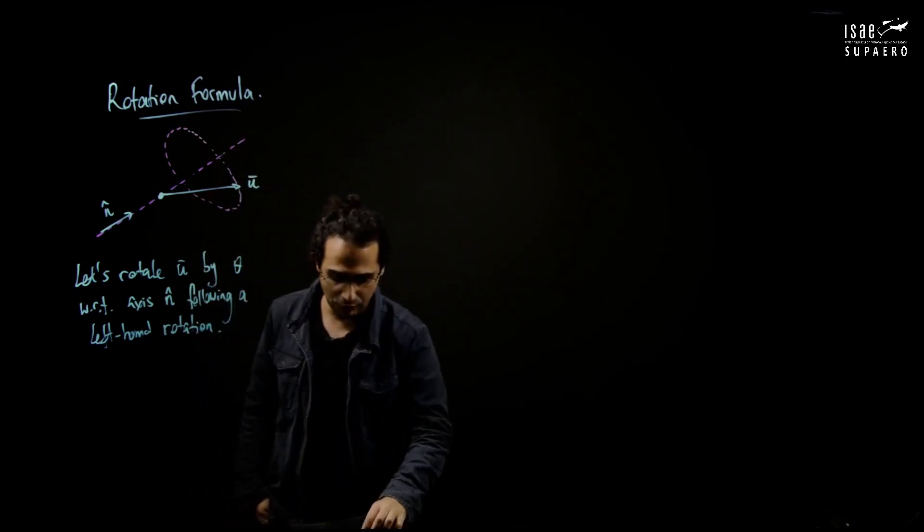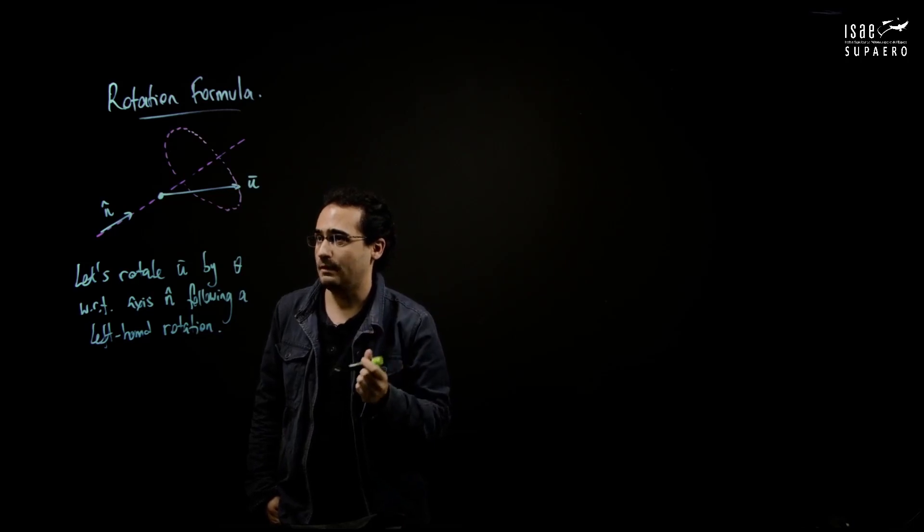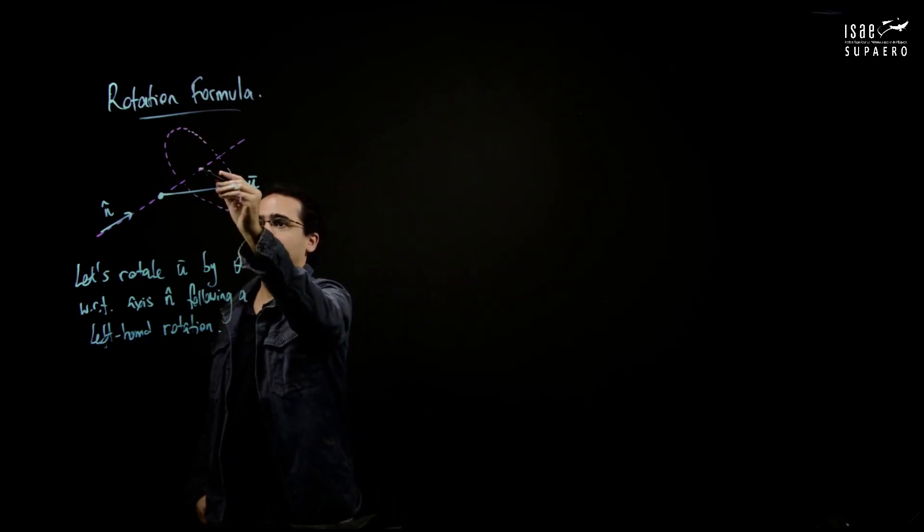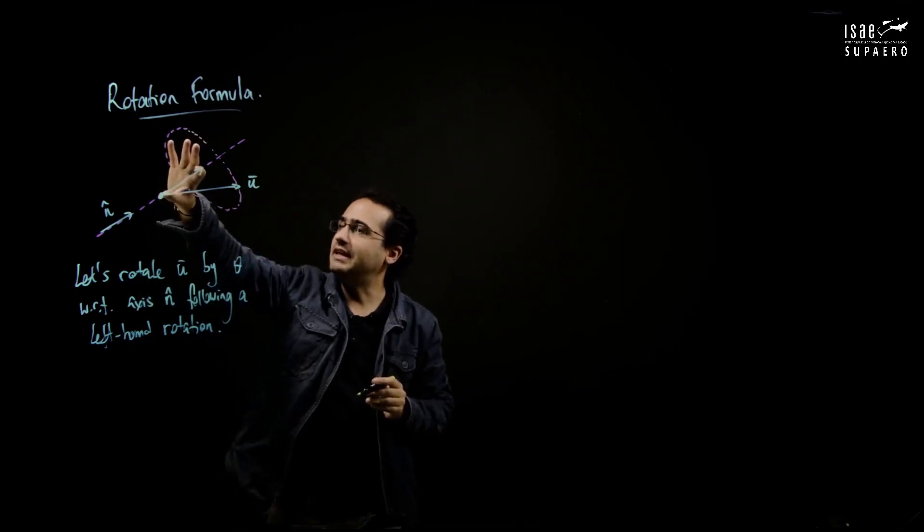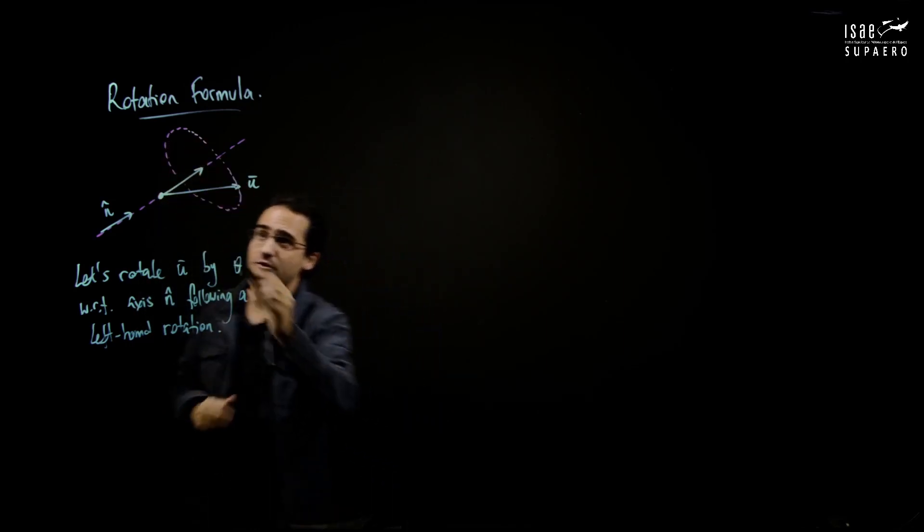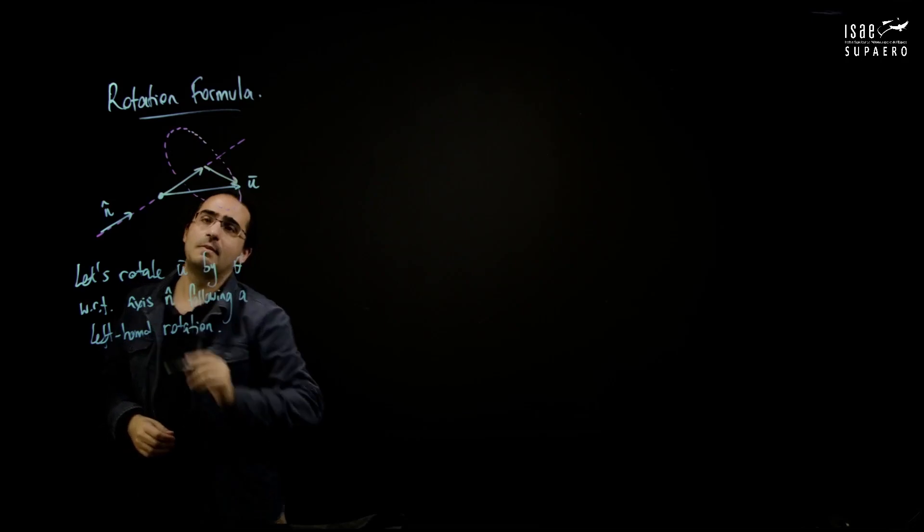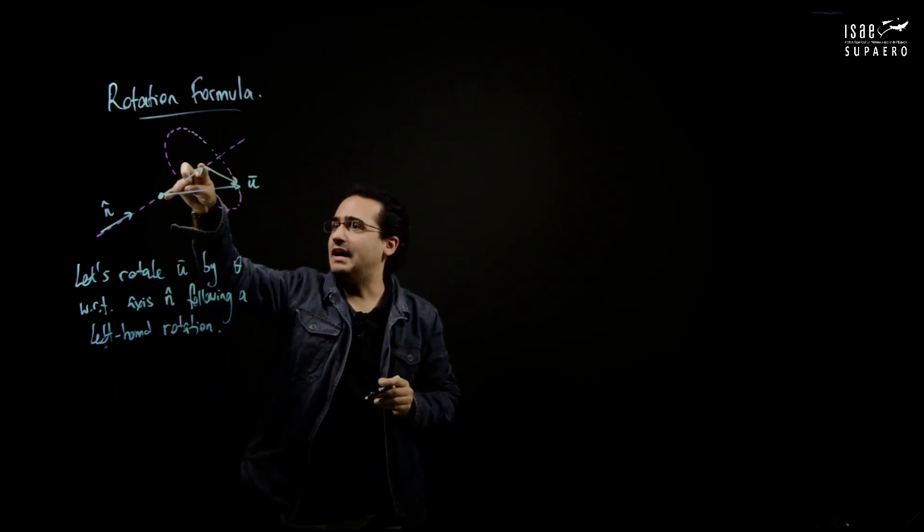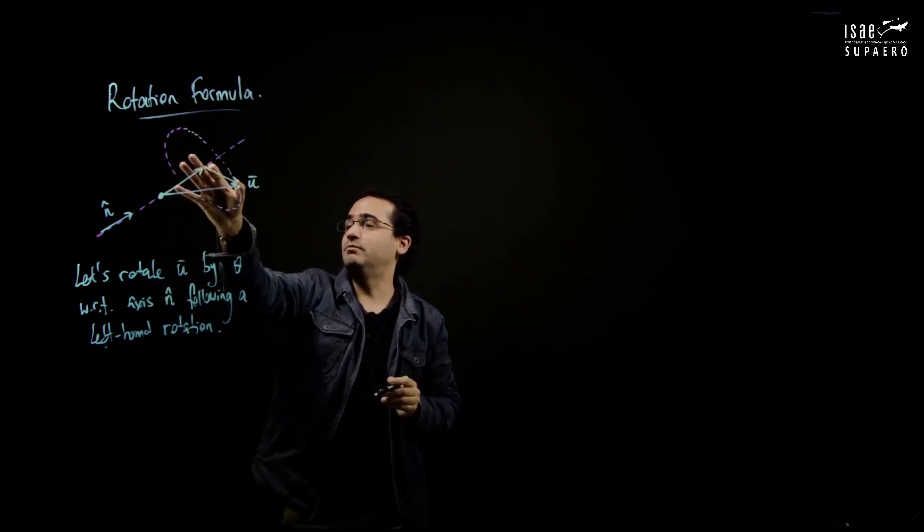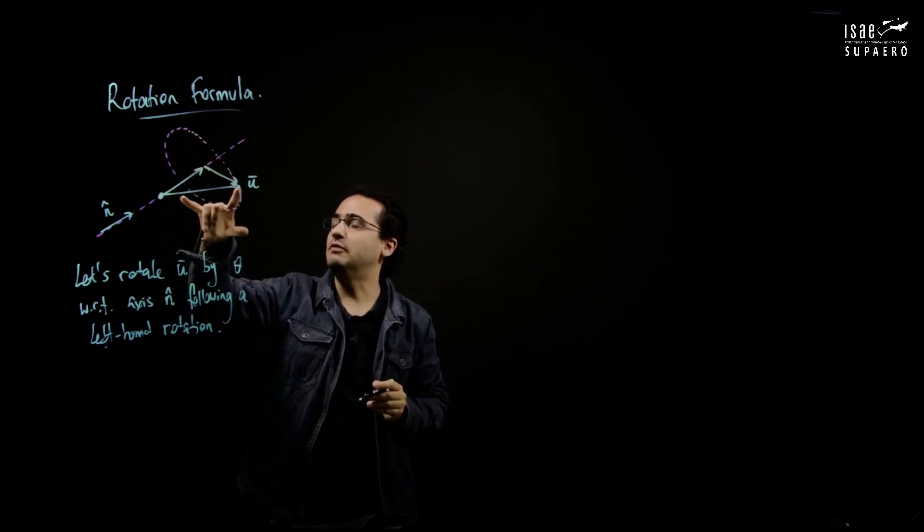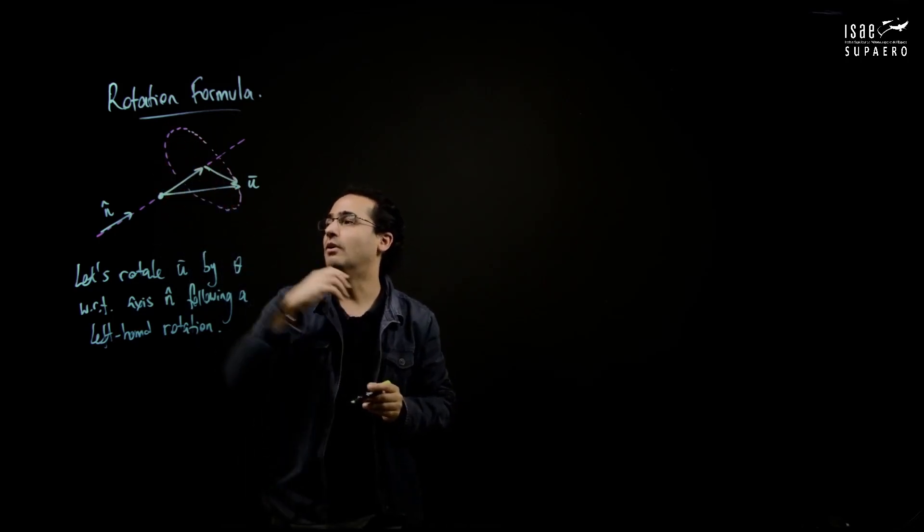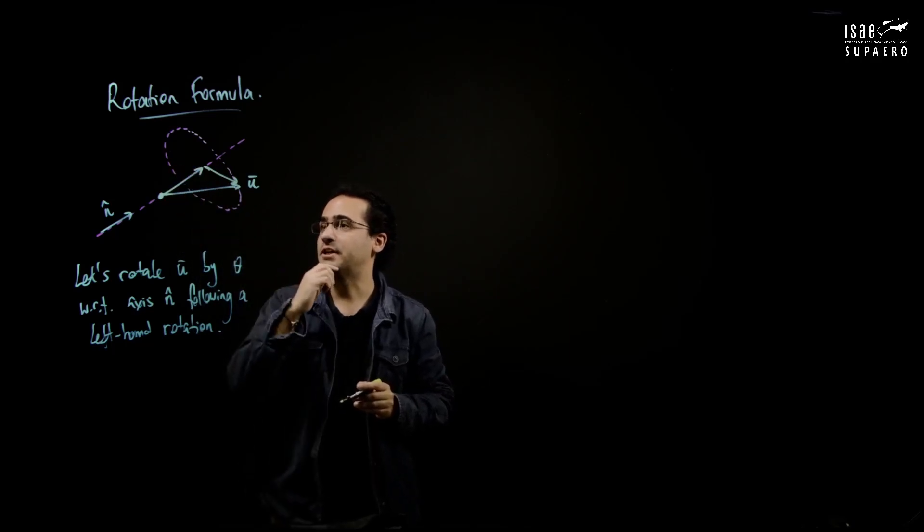So originally, this u can be seen as a sum of a vector that lies on the axis, and a vector which is orthogonal to it. This vector that lies on the axis such that this one, to make this one orthogonal, I do a decomposition. So I will decompose, I will project u on n, so this is a projection.